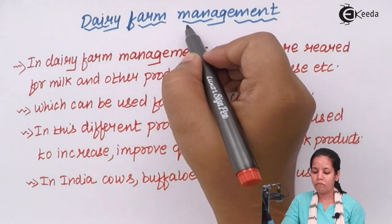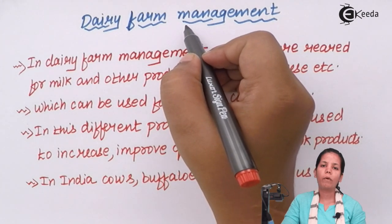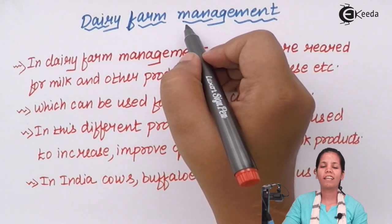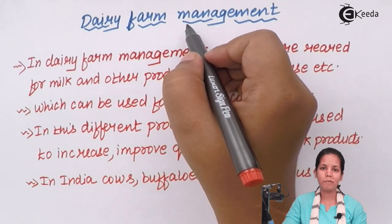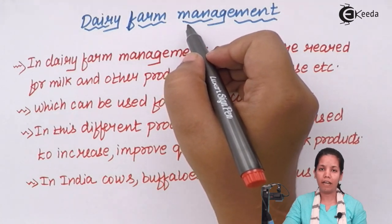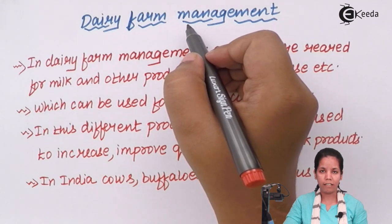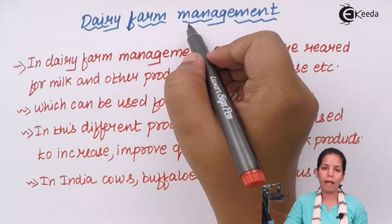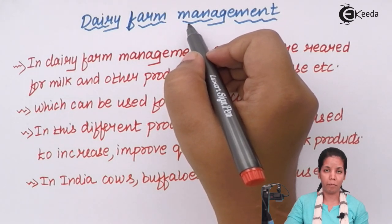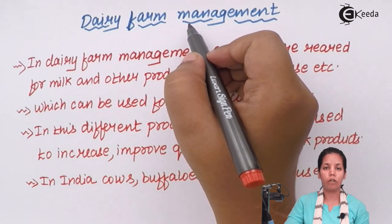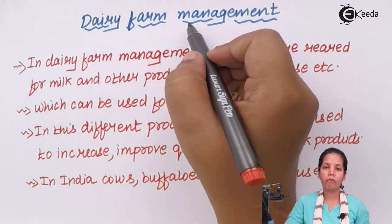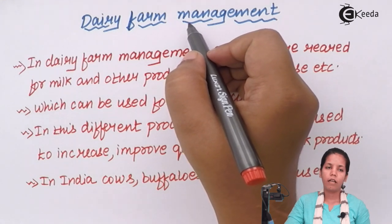Dairy Farm Management — animals are basically reared and given shelter and nutrition so that their byproduct, which is milk products, can be used for human consumption. Also, some kind of profit can be gained by selling those products.